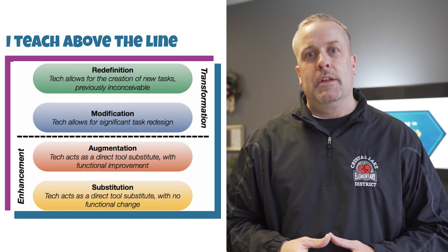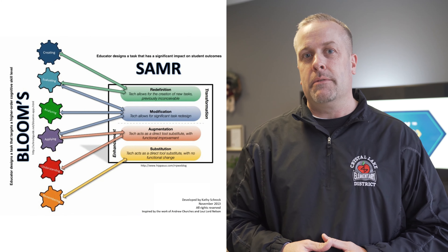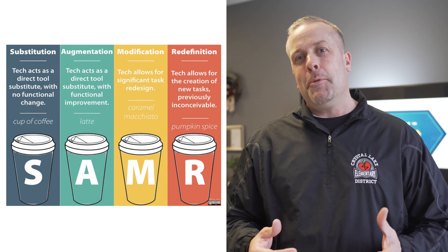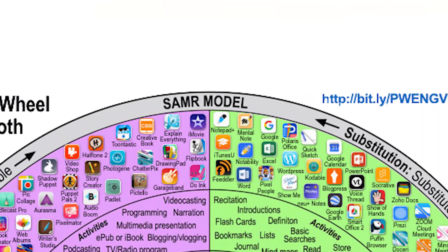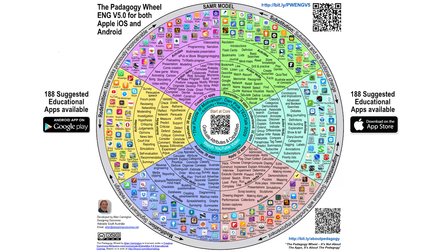SAMR is the first and most well-known framework, and there are many versions of it on the internet to help people understand — Teaching Above the Line, Enhancement to Transformation, SAMR and Bloom's Taxonomy, and one of the more creative variants, SAMR and Starbucks. Many people love this framework because it classifies levels of technology integration. However, some criticize it for being app-driven and pushing teachers to transform every lesson, beginning with technology instead of starting with learning objectives.